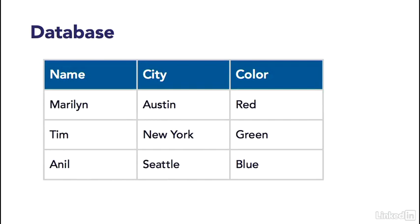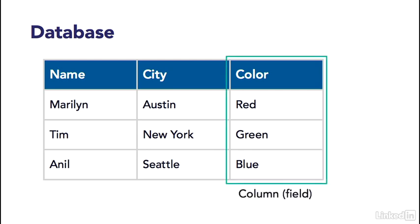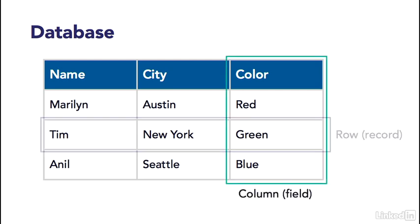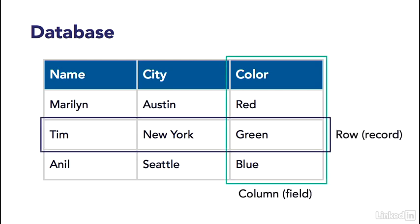We have three kinds of information: a name, a city, and a color. In a database, the individual kinds of information are organized into columns, and each set of information is organized into rows. Often, the columns are called fields, and the rows are called records.